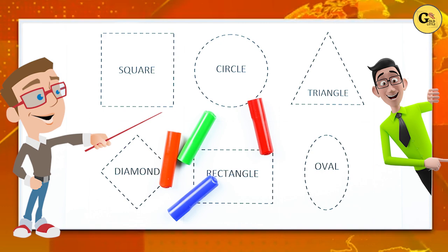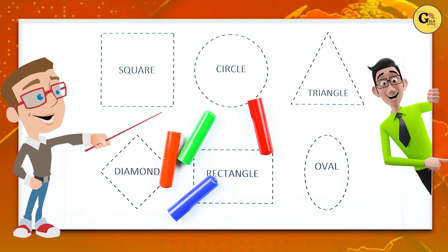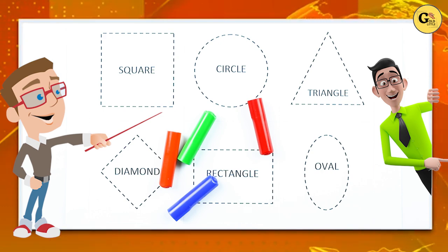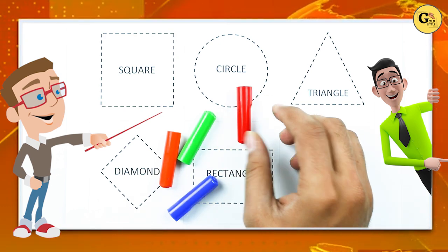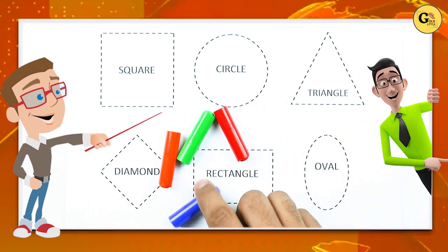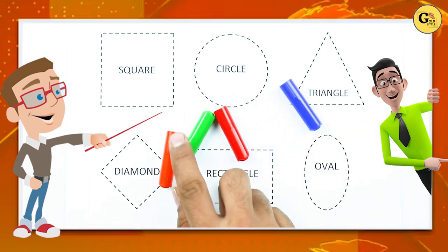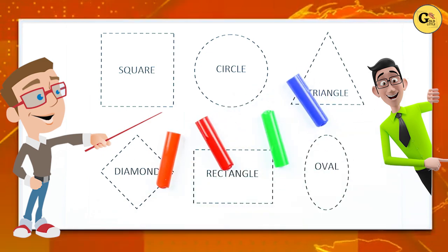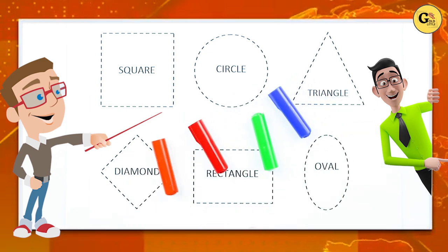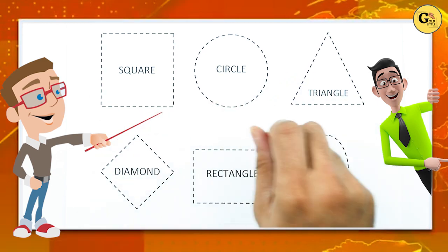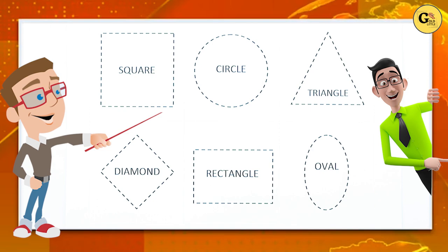Square, circle, triangle, diamond, rectangle, oval with colors. Red color, blue color, orange color, green color.